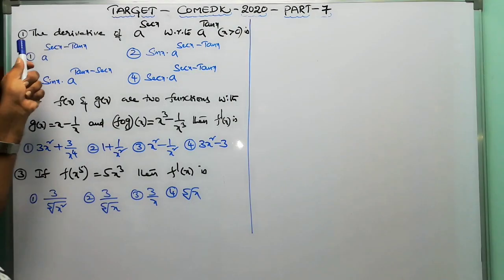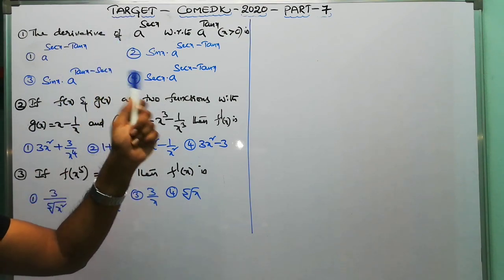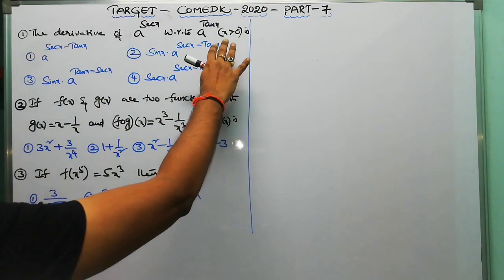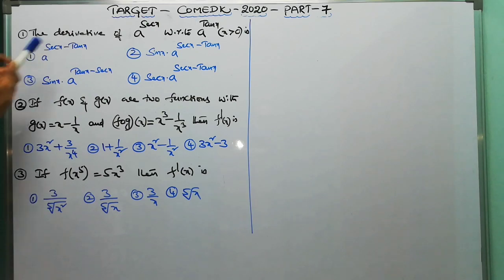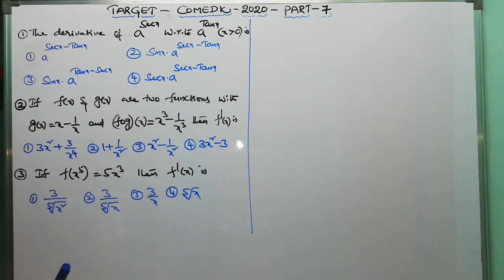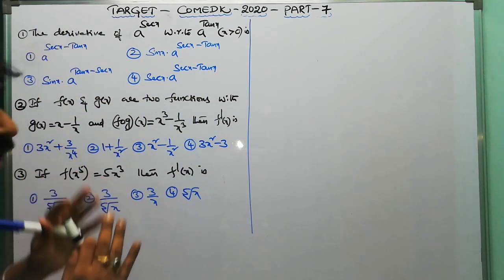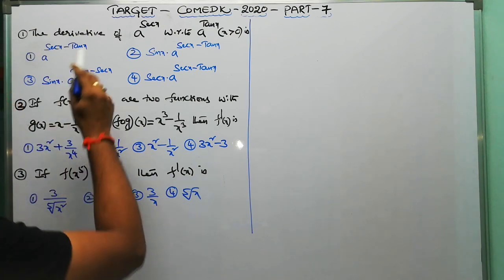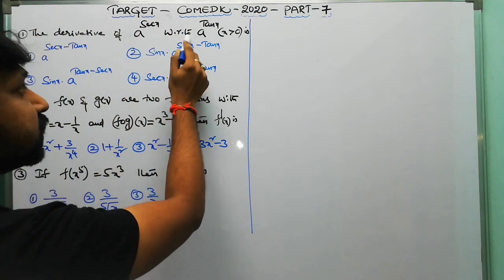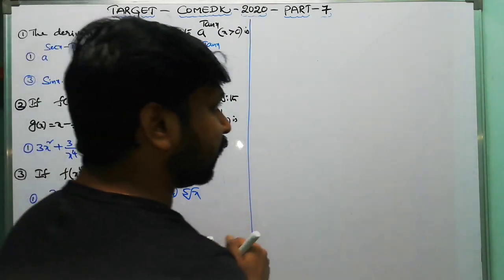First question: the derivative of a^(sec x) with respect to a^(tan x), where x is greater than zero. This is a slightly different model question but a very good one — it involves the derivative of one function with respect to another function.